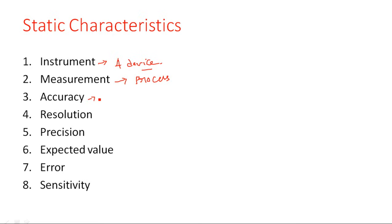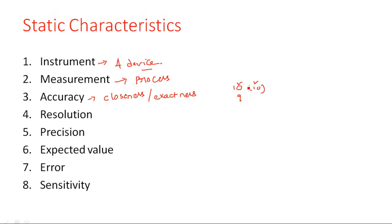Coming to the third one — accuracy. Accuracy is nothing but the degree of closeness or exactness towards the expected value. Suppose I am expecting a value of 10 and I got 9 — then there is no accuracy. But if the measured value is also 10 and the expected value is 10, then the instrument has 100% accuracy. Accuracy is determined by the degree of closeness or exactness of the measured value to the expected value.